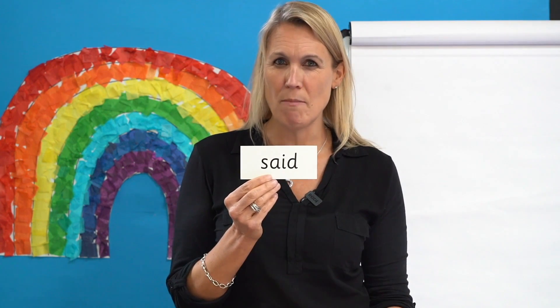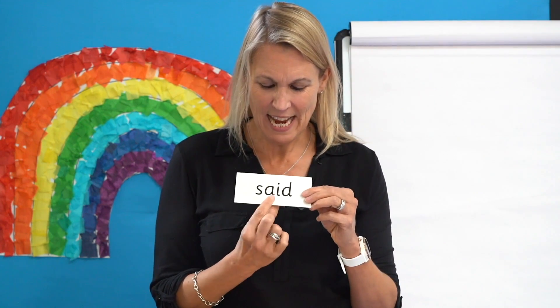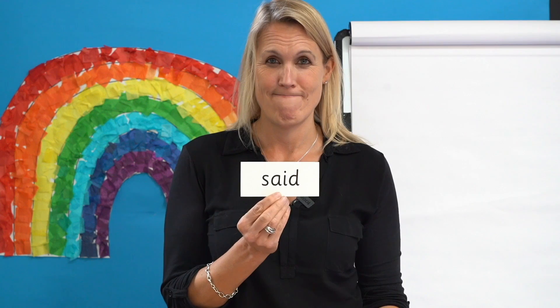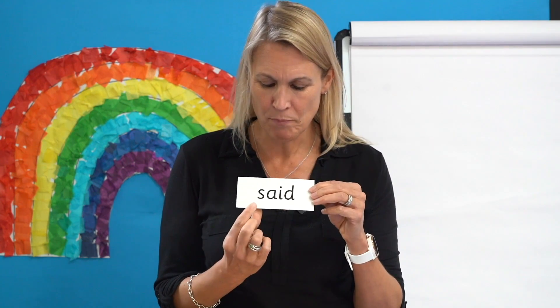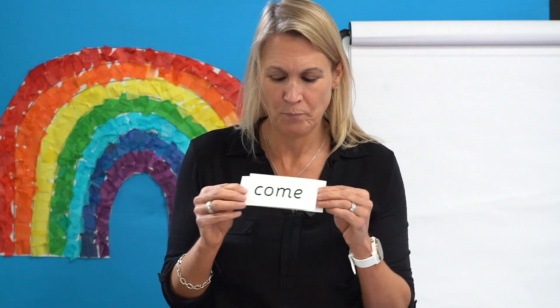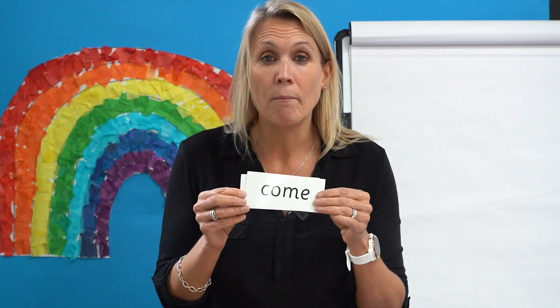Now let's practise reading a tricky word that you have met before. Have a look at this one. You know how to read this tricky word. Can you remember the tricky bit? Yes, well done. The tricky bit is here — this says e. Can you read the word? Well done. Let's read it together. Shall we try reading these words quickly now? I'm going to mix them up — I want to hear you reading them aloud. Are you ready? Let's check: Come. Said. Great reading. Well done.